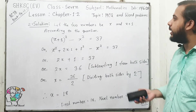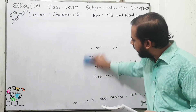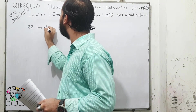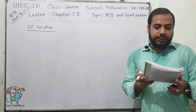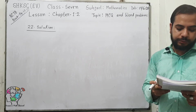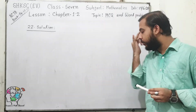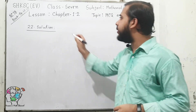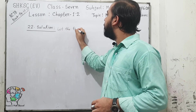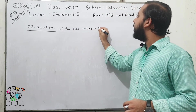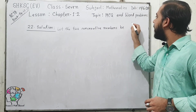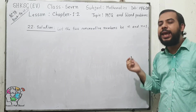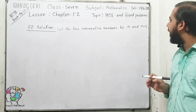Now we move on to question number 22. Find two such least consecutive numbers so that the difference of their squares is a perfect square. We need to find two consecutive numbers whose difference of squares is a perfect square number. Let the two consecutive numbers be n and n plus 1.